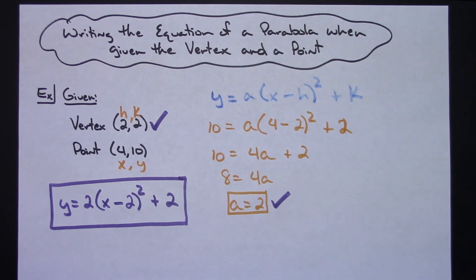Just one quick short example here of how you would go about writing that equation of the parabola when you're given that vertex and a point.